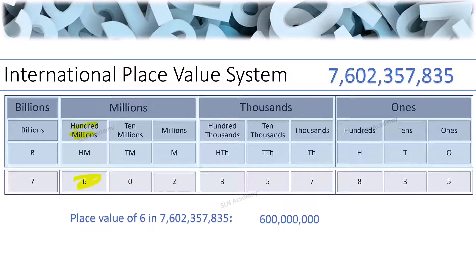How many zeros do we need to place in Hundred Millions? Check the number of digits present towards the Ones position. They are 1, 2, 3, 4, 5, 6, 7, and 8. So we need to place 8 zeros for Hundred Millions.